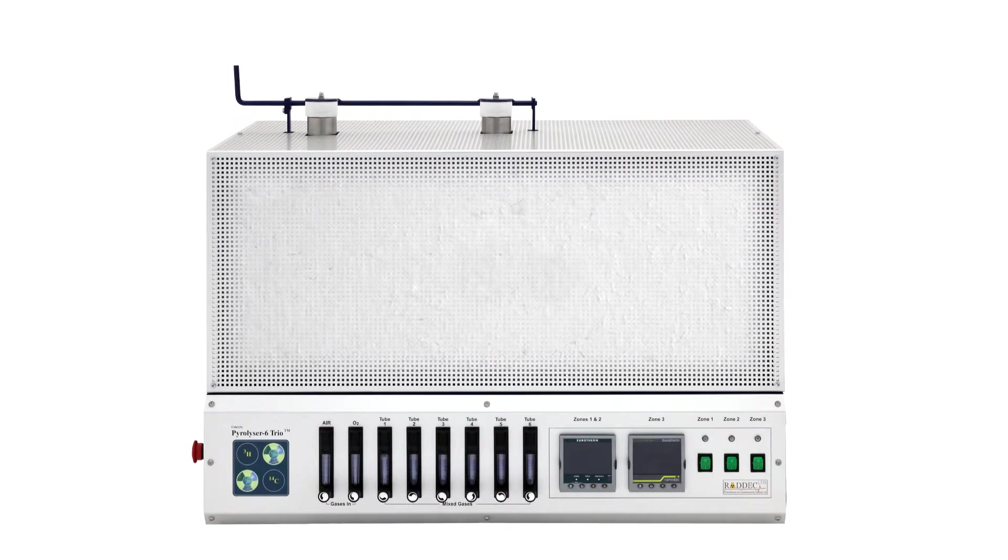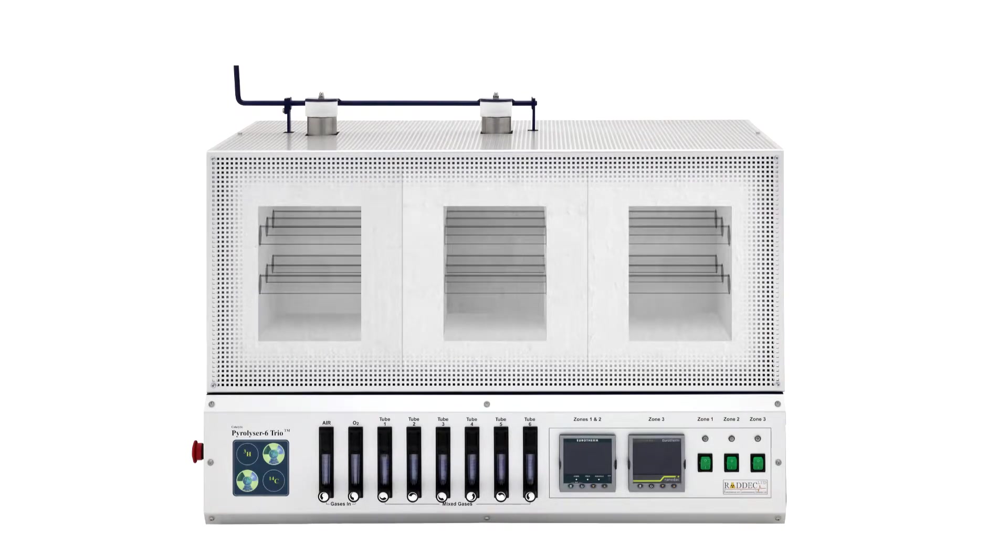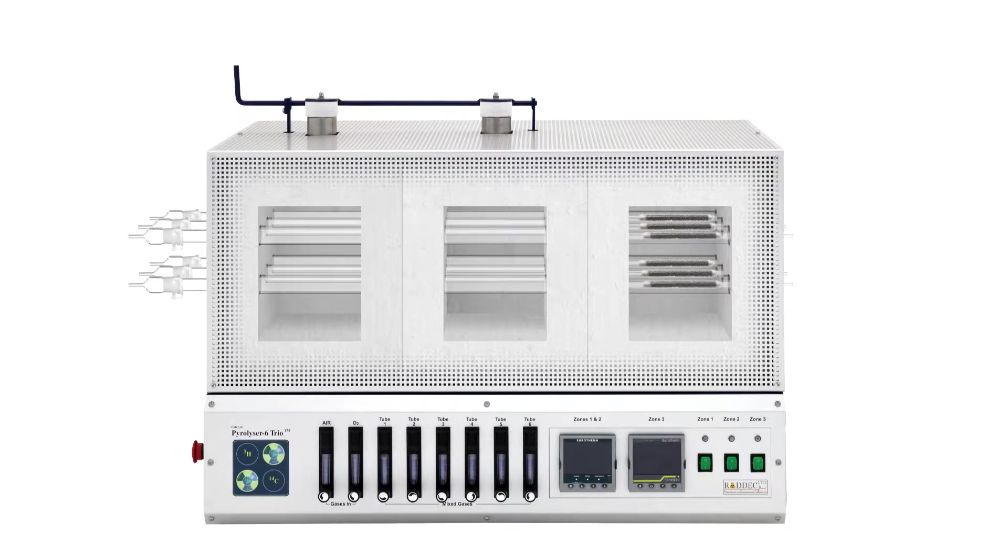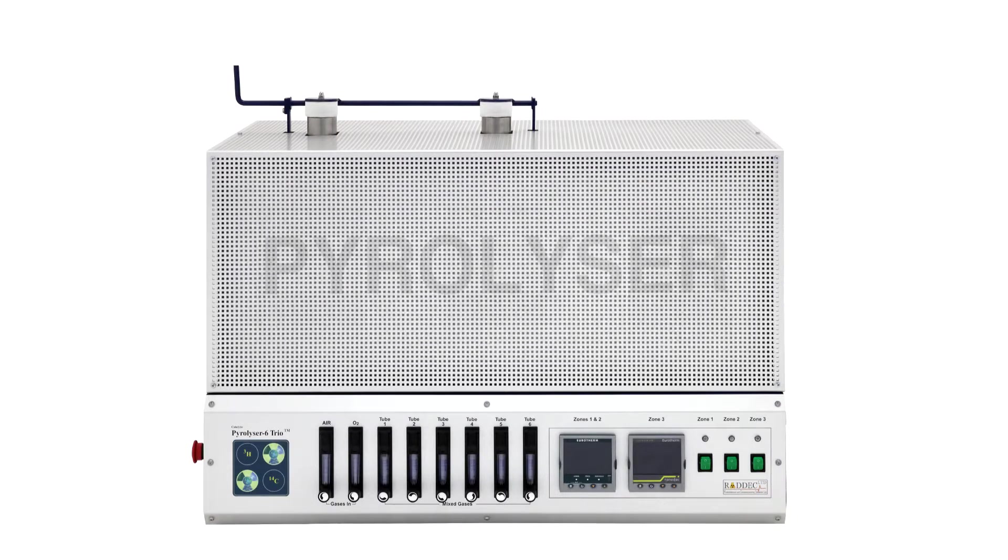The pyrolyser comprises three independently controlled furnace zones: the catalyst zone, the sample zone and a central thermal isolation zone. A silica liner passes through the three zones to support the combustion tubes and to ensure rapid transfer of radiant thermal energy to the sample.